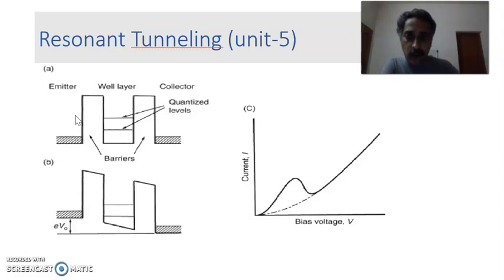Suppose imagine there is an electron here with an energy E. This energy cannot, this electron with this energy cannot climb the barrier, enter into the well, and then cannot climb another barrier to reach the collector region. So it has only one option, it has to tunnel through the first barrier, the quantum well, and the second barrier to reach the collector.